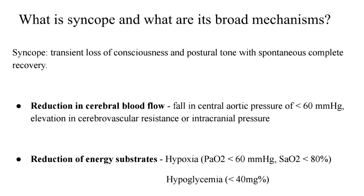There are two important energy substrates which contribute to the proper functioning of the brain parenchyma: oxygen and glucose. When there is hypoxia severe enough — for example, when the partial pressure of oxygen is less than 60 mmHg or the saturation is less than 80% — it contributes to syncope. Secondly, severe hypoglycemia to less than 40 mg/dL leads to reduction of this energy substrate to the brain parenchyma and contributes to syncope.